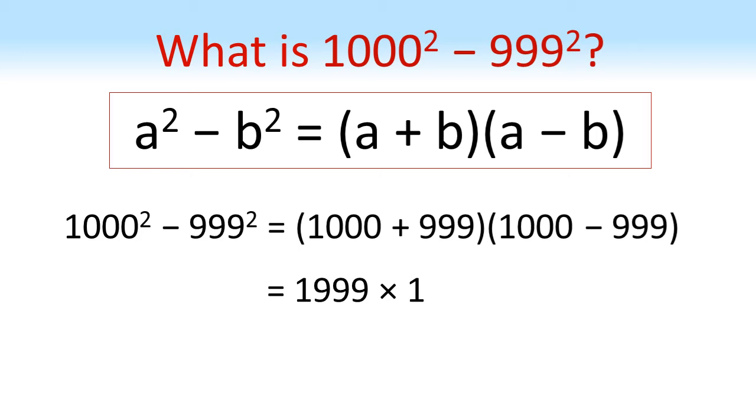But then this is just 1999 times by 1, giving us an answer of 1999. Much quicker than trying to square the two separate numbers and find the difference between them.